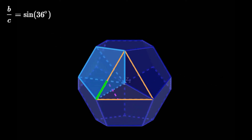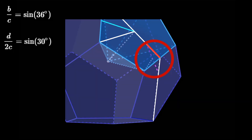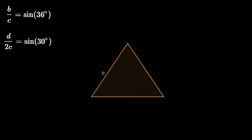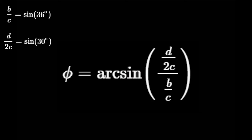So B over C equals sine 36 degrees. The base of this pyramid is an equilateral triangle. We extend a perpendicular line from D to this angle and get a new equation: D over 2C equals sine 30 degrees. Now taking this triangle and extending a perpendicular line from the base, we find a right triangle. This angle — we'll call it phi — is exactly what we've been looking for, so sine phi equals D over 2B. We can find phi by dividing D over 2C by B over C, then taking the arcsine of that value. So we have found the angle between the base and one of the sides of the pyramid.